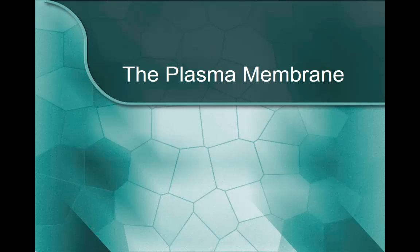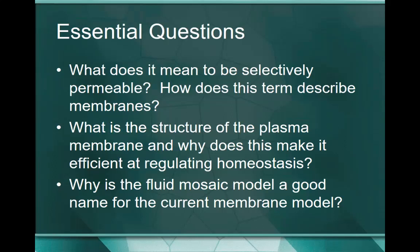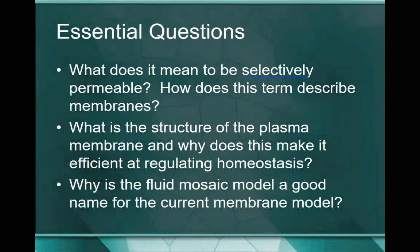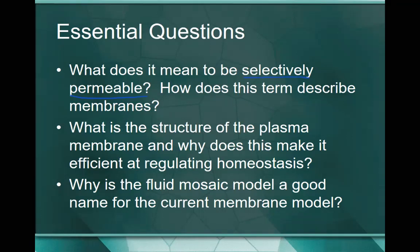There are some key words you're going to hear as we go through today, so I'll try to highlight those for you so you make sure you get something about those in your notes. Let's go over the essential questions. Number one: what does it mean to be selectively permeable? How does this term describe membranes? That's the first word I really want to highlight. What does it mean to be selectively permeable? You might be able to figure that out on your own, but we'll talk more about it here in a second.